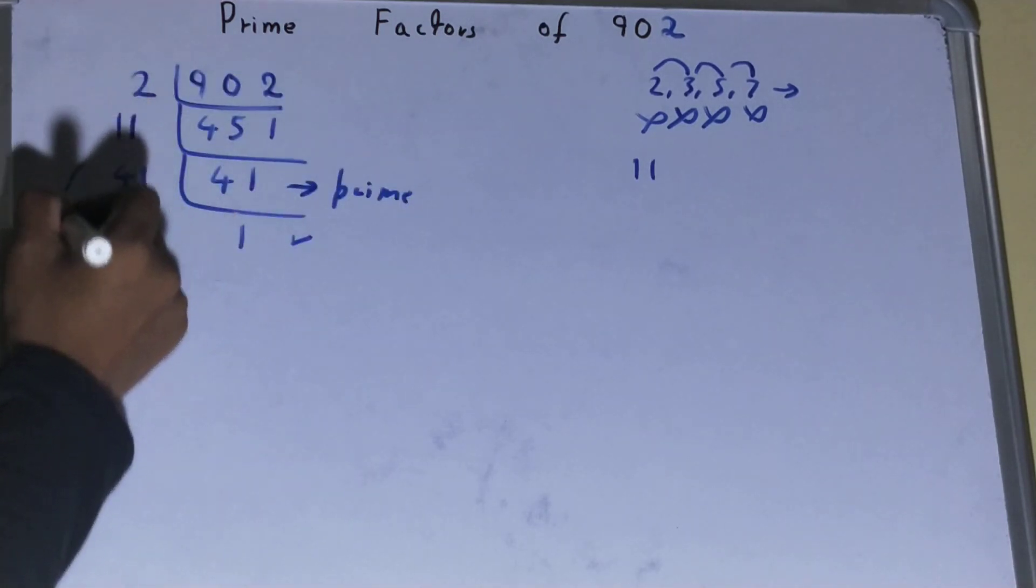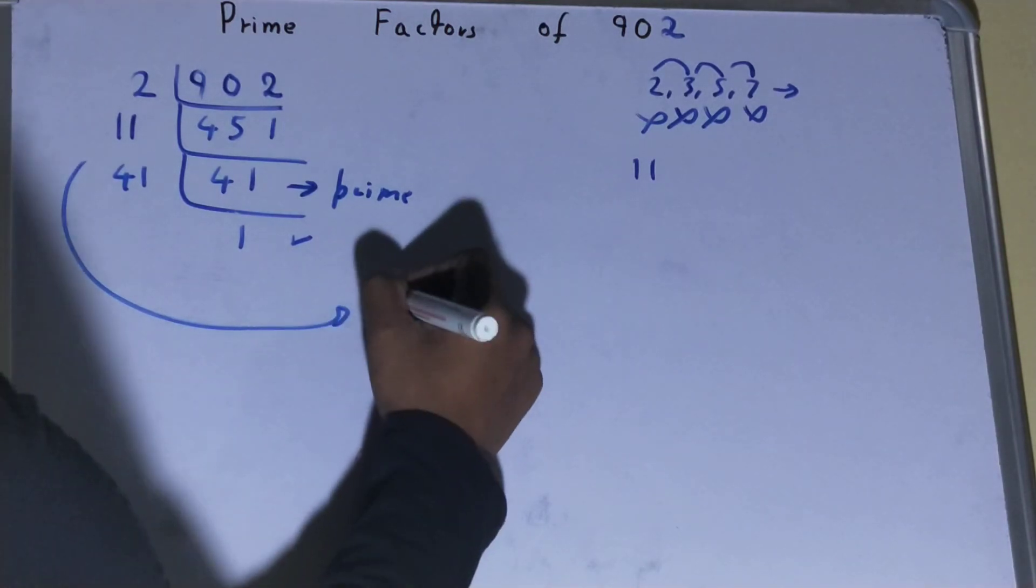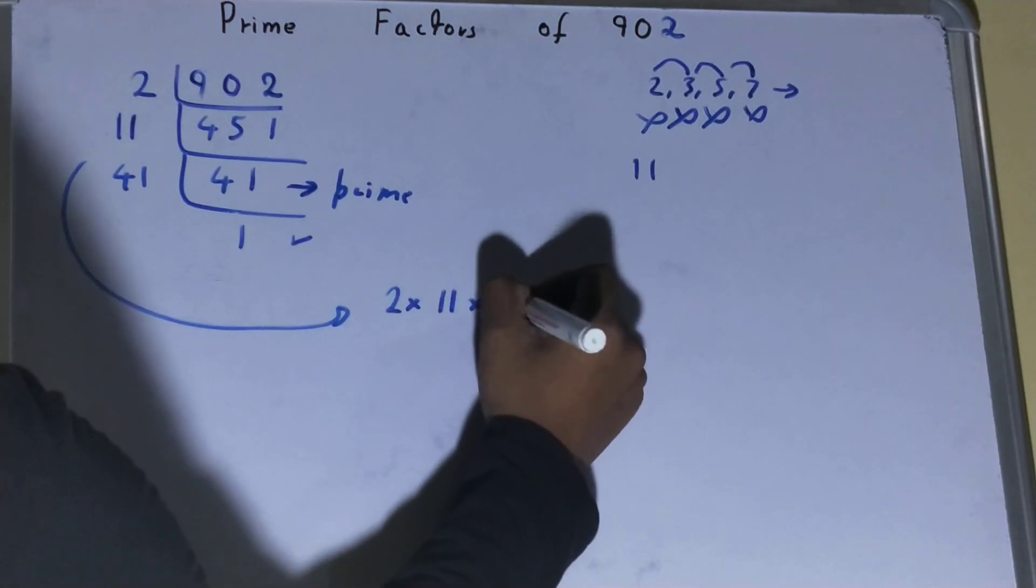Once you get 1, the work is done, and whatever you have on the left-hand side will be the set of prime factors for the number 902, that is 2 × 11 × 41.